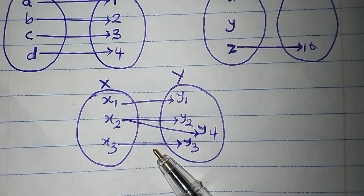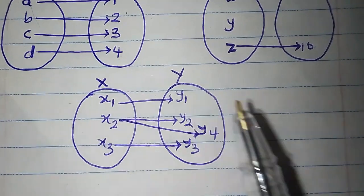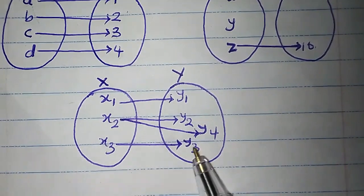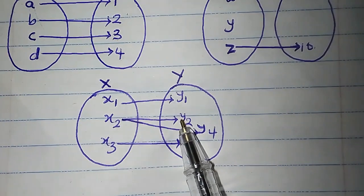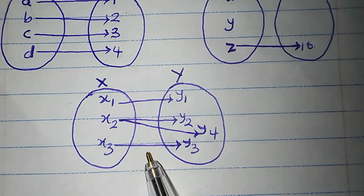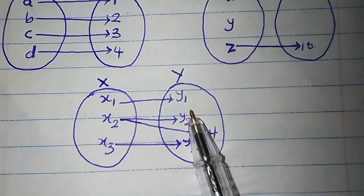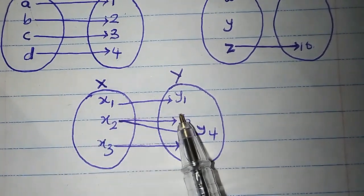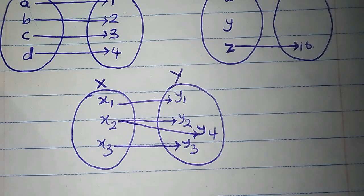Is this a function? Set X has members X1, X2, X3. Set Y has Y1, Y2, Y4, Y3. X1 is related to Y1, X2 is related to both Y2 and Y4, and X3 is related to Y3. This is not a function, because one member of set X has two relations in set Y. A relation is a function only if one member of set X is related to exactly one member in set Y. Since one maps to two here, it is not a function — it is just a relation.